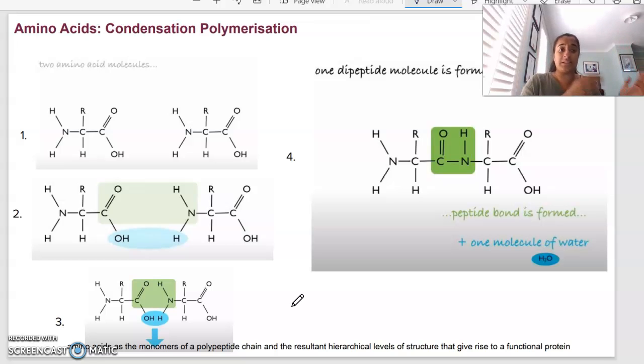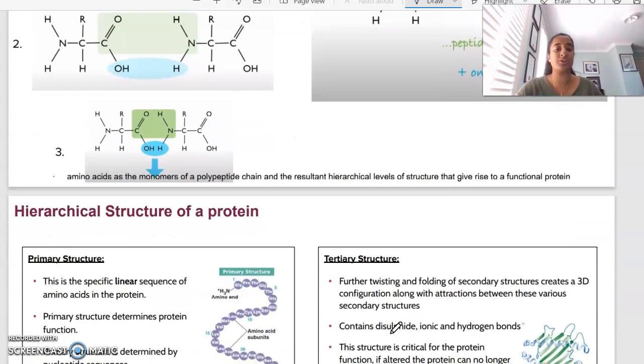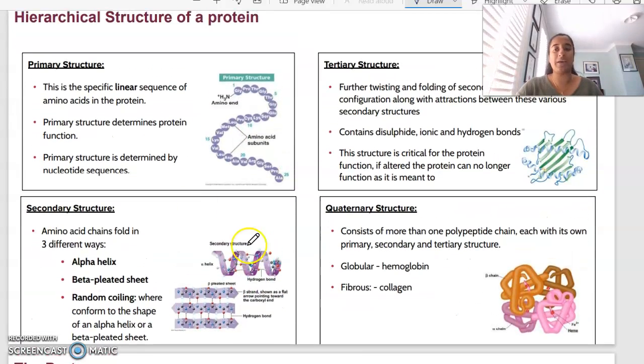When more and more amino acids form together, we are then forming more and more of those peptide bonds. So we've formed a polypeptide chain, which is going to give rise eventually to a functional protein. If we look at the structure, hierarchical structure of a protein, we basically say that we've got four hierarchies. Our primary structure is the sequence of amino acids. So that linear sequence, once condensation polymerization has occurred, we've got a sequence of amino acids. This is going to determine the protein function. So the order of those amino acids is really important.